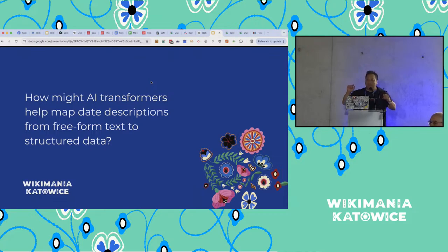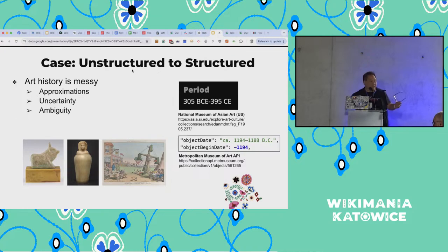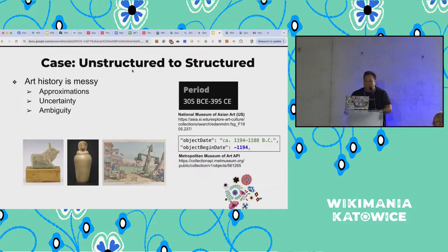We do this all the time in the museum world. A curator enters the date of an item, which looks kind of messy — like '305 BC to 395 CE,' or '1194 to 1188 BC.' We want those as statements in Wikidata. If it's that clean, we can extract the first and last number. But art history is messy — there are approximations, uncertainty, ambiguity. That's not even a sad thing; it's just what art history is about.